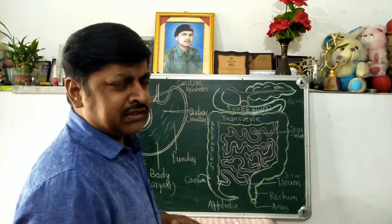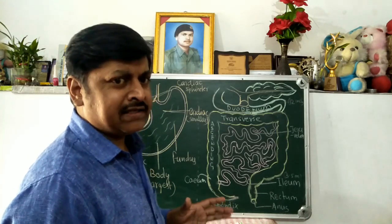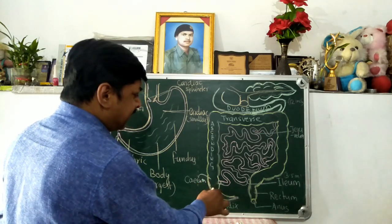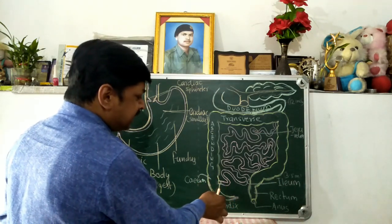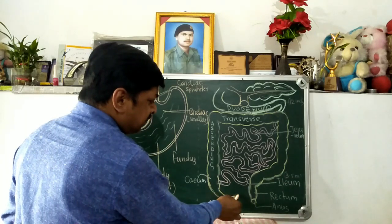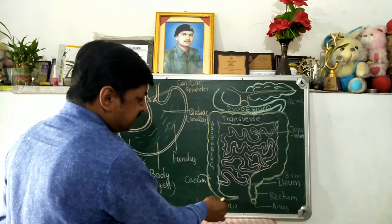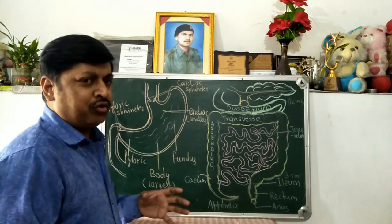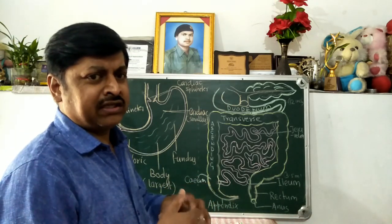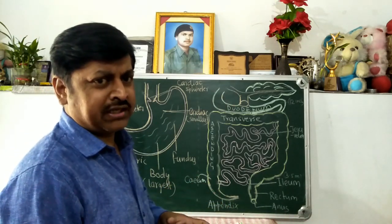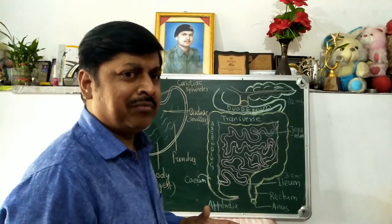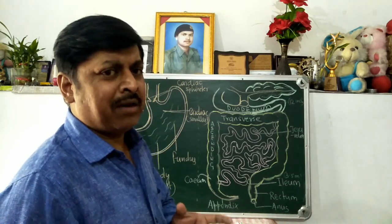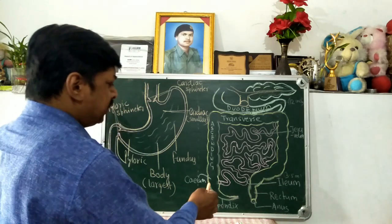In humans, cellulose is not digested, so the cecum is slightly narrowed. There is a long extension of the cecum called the appendix. Sometimes food particles enter the appendix, and when they are decomposed, toxins are produced that cause inflammation of the appendix — this is called appendicitis. The opening where the ileum opens into the cecum is guarded by a valve called the ileocecal valve.